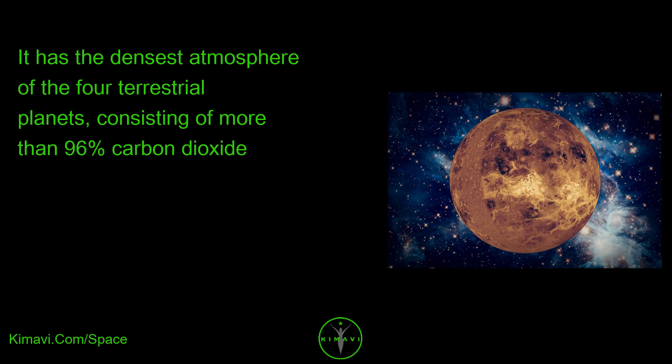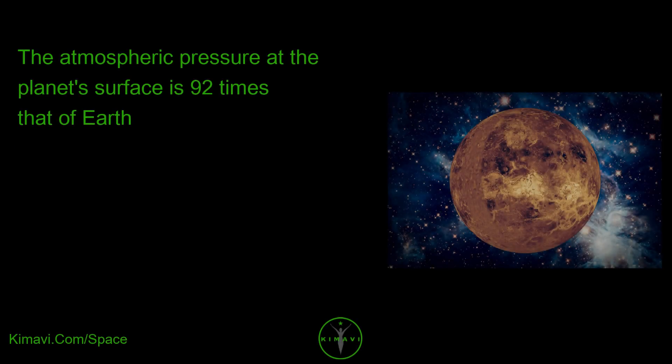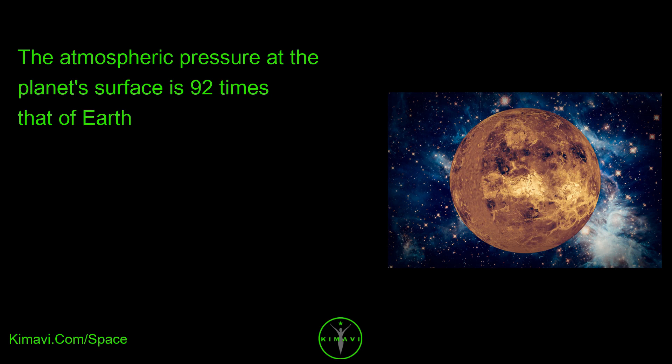It has the densest atmosphere of the four terrestrial planets, consisting of more than 96% carbon dioxide. The atmospheric pressure at the planet's surface is 92 times that of Earth.